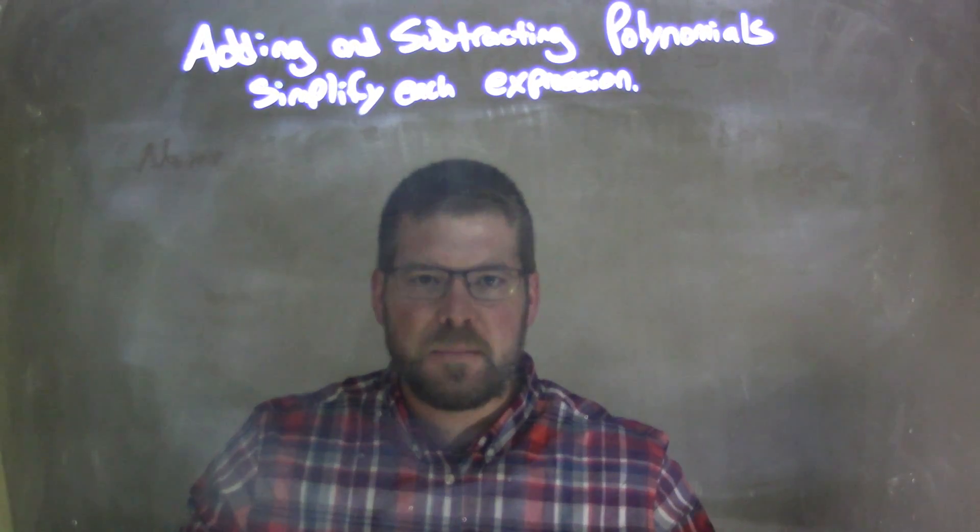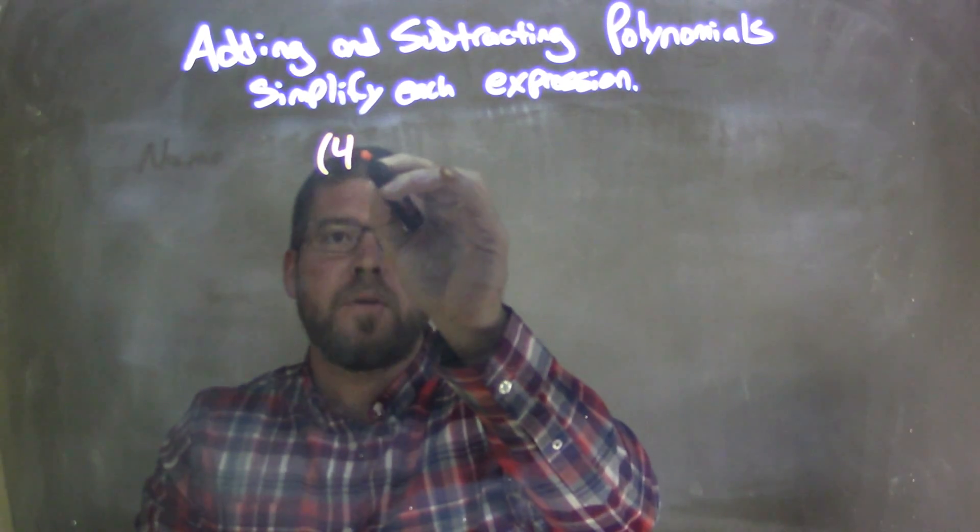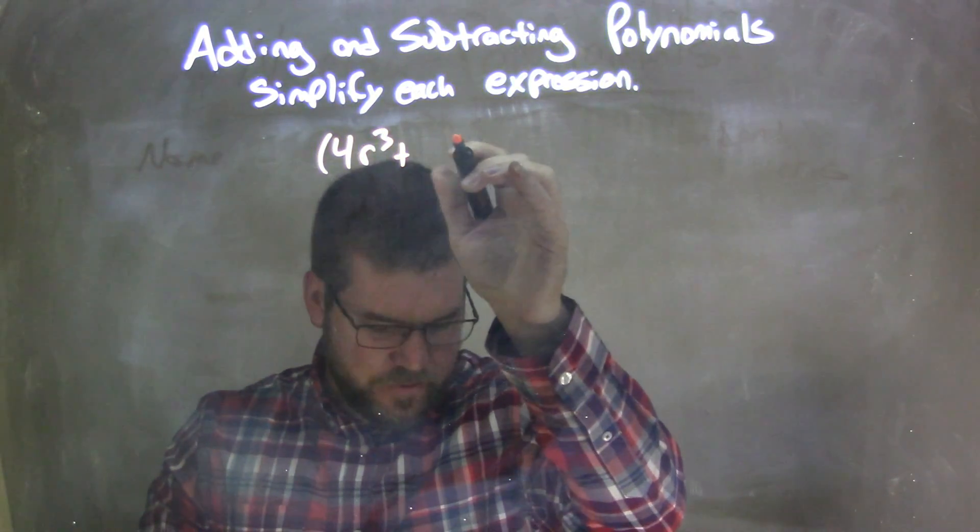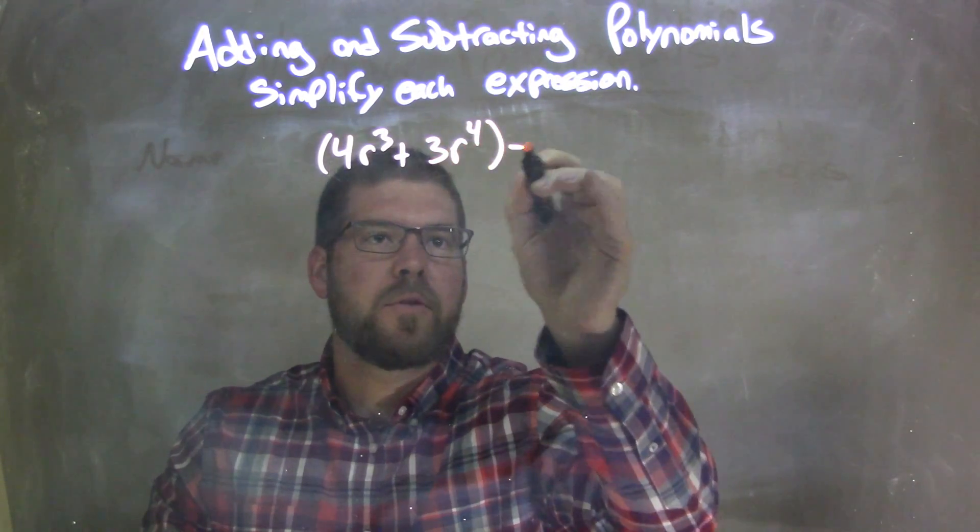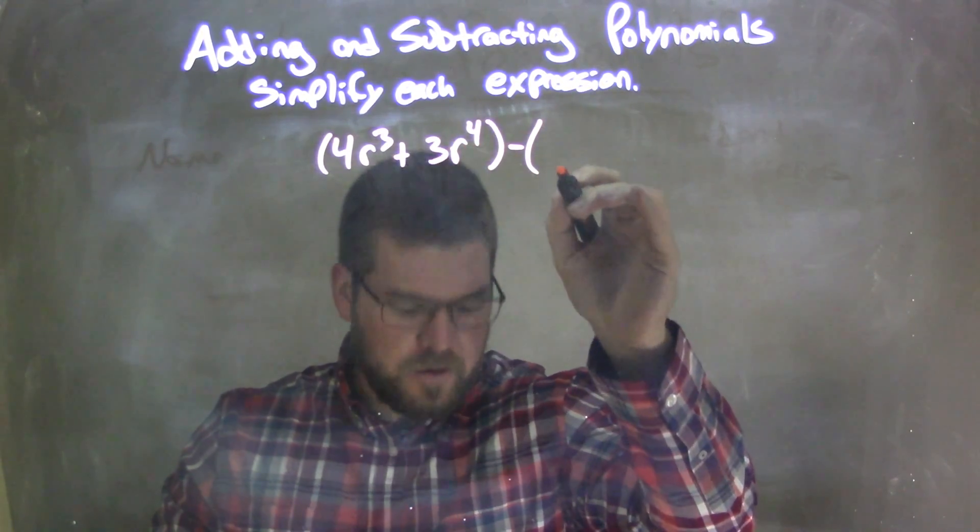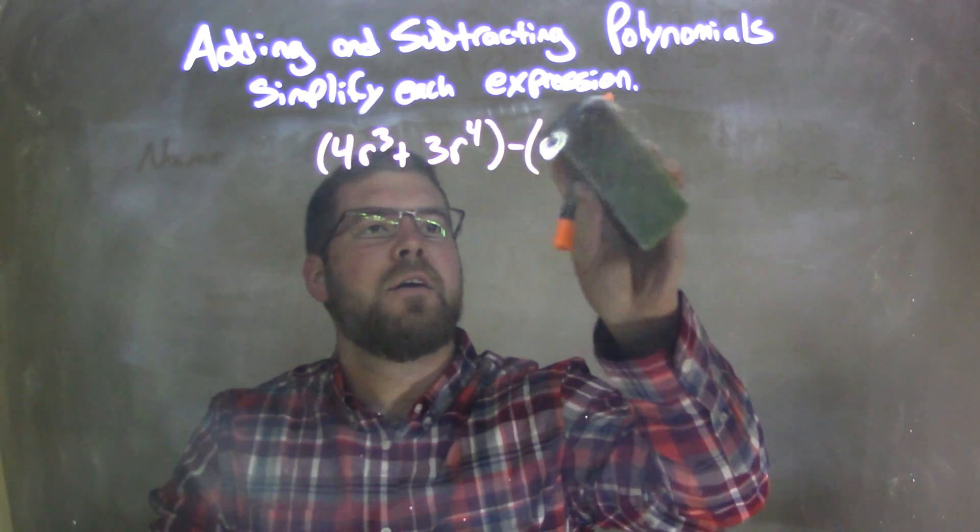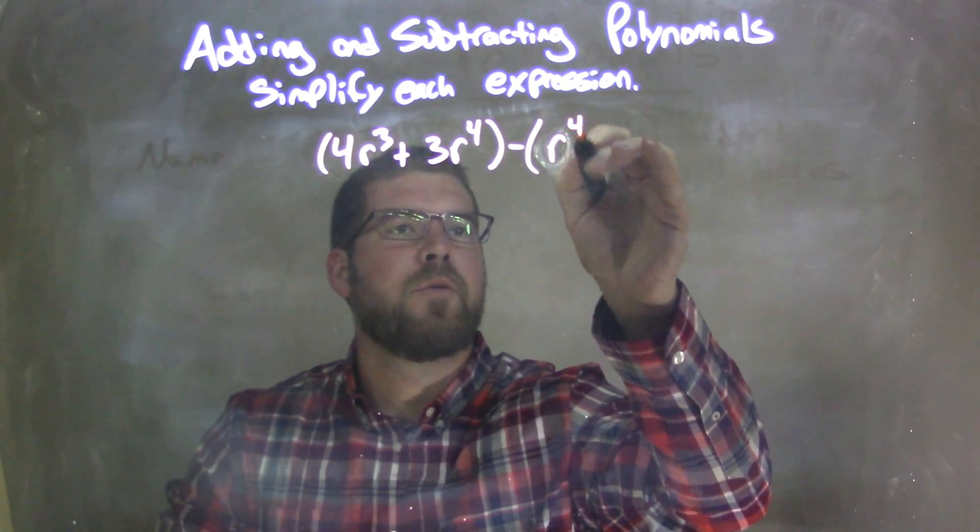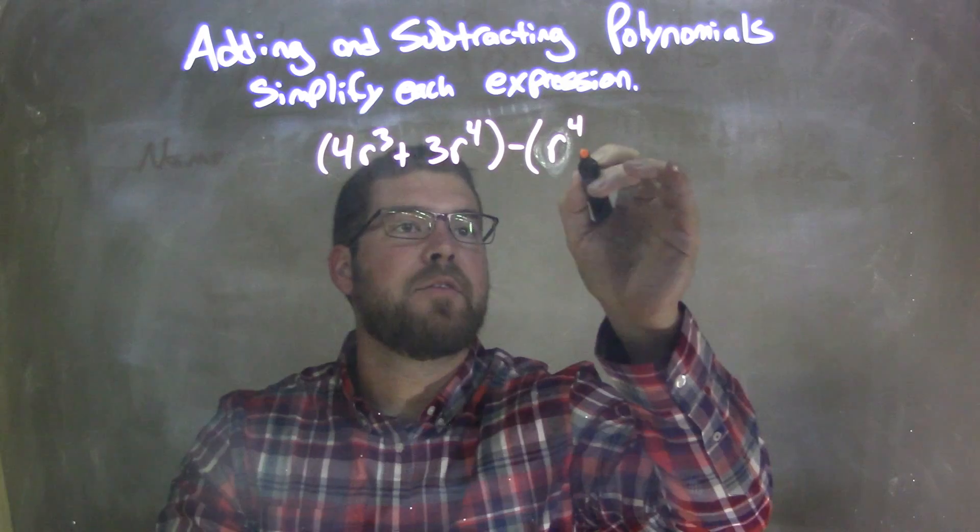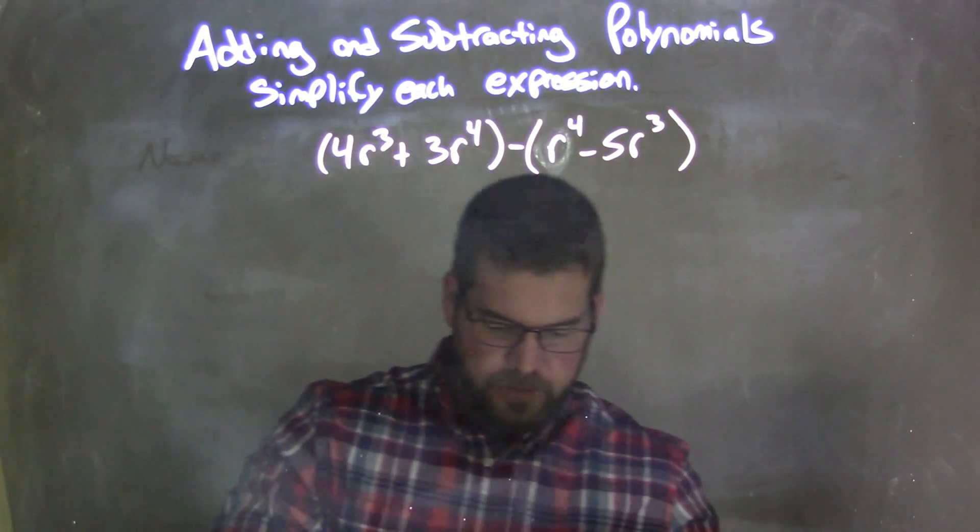So if I was given this polynomial: 4r³ + 3r⁴, close parentheses, parentheses again, minus... just r⁴. I wrote up 4, I don't know why I put 4, just r⁴, so r⁴ minus 5r³. Okay.